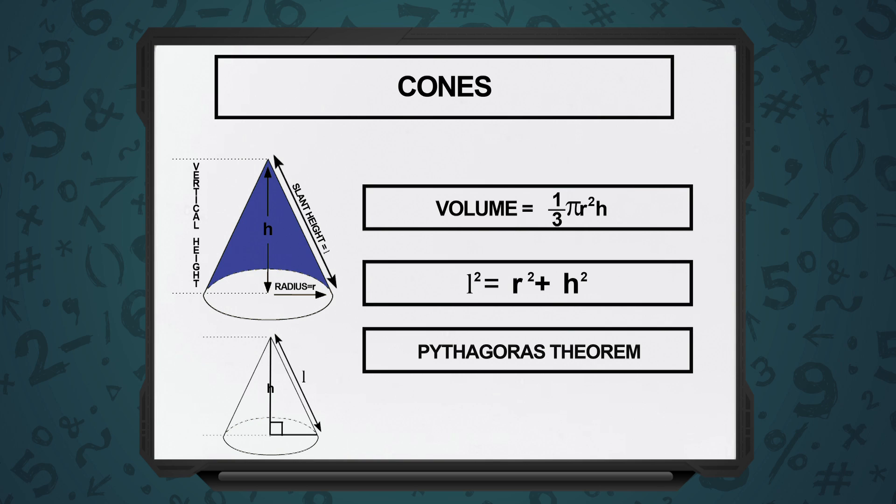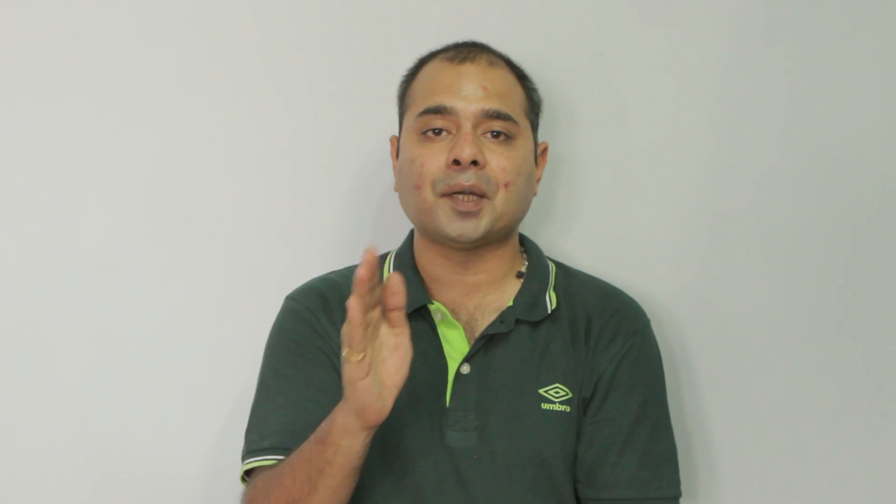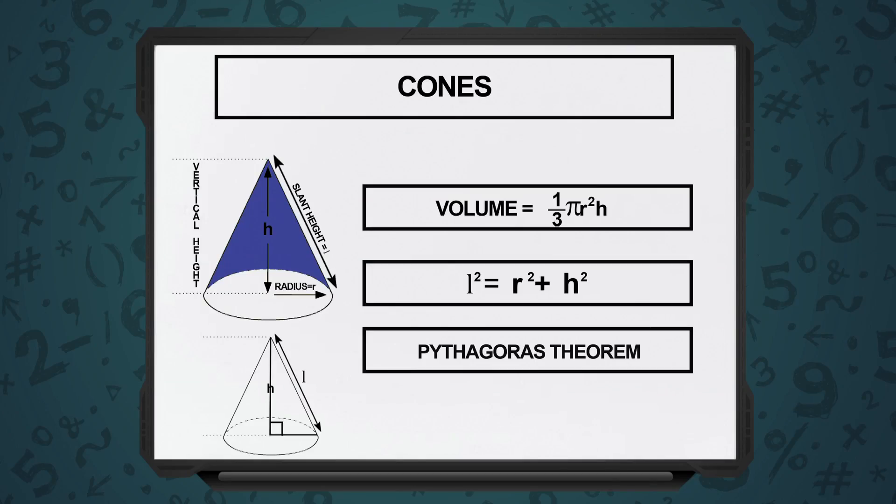Now, in a cone, there are two heights that come into the picture — one is the straight height h and the other one is the slant height l. So, if the radius of base is r, straight height is h, and the slant height is l, you can straight away use the theorem of Pythagoras and say r squared plus h squared is equal to l squared.